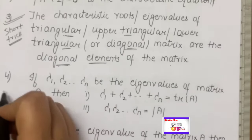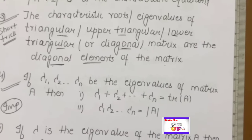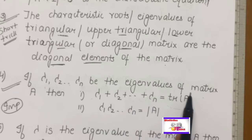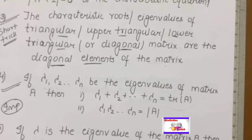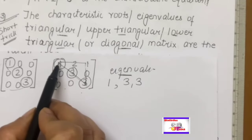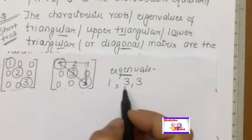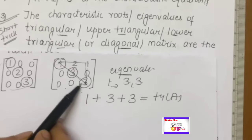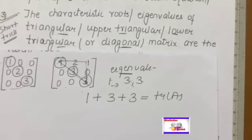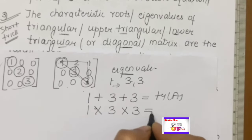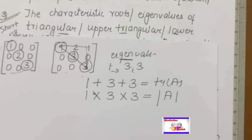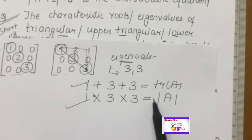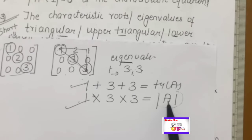Another very important property: if eigenvalues are λ₁, λ₂, ..., then the sum of eigenvalues equals the trace, which is the sum of diagonal elements. The second property is that the product of all eigenvalues equals the determinant of A. So if eigenvalues are given and you're asked to find the determinant, simply multiply all eigenvalues together — that gives you the determinant.